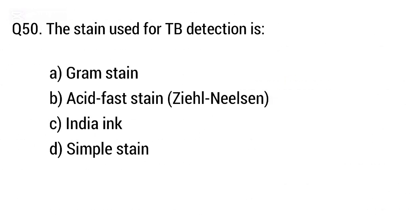Question 50: The stain used for TB detection is. The right answer is Option B, acid-fast stain.